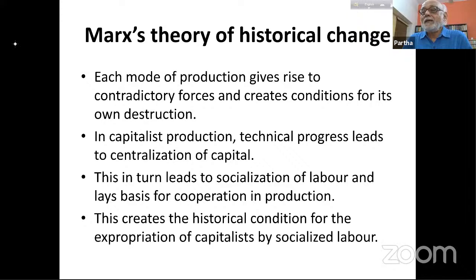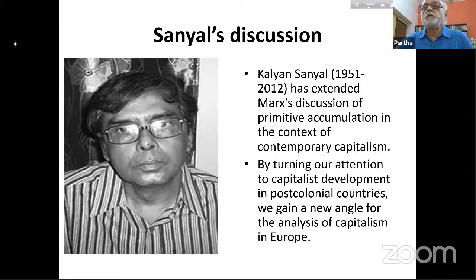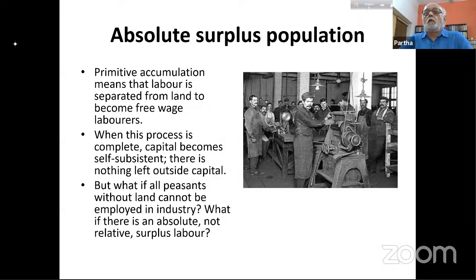Each mode of production gives rise to contradictory forces and creates conditions for its own destruction. In capitalist production, technical progress leads to centralization of capital, which leads to the socialization of labor and lays the basis for cooperation in production — creating the historical condition for the expropriation of capitalists by socialized labor. Capital and labor are both parts of capitalist production; when capital becomes self-sustaining there is nothing left outside capital.